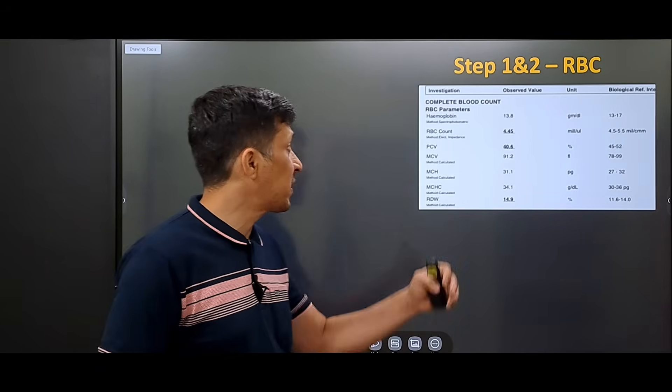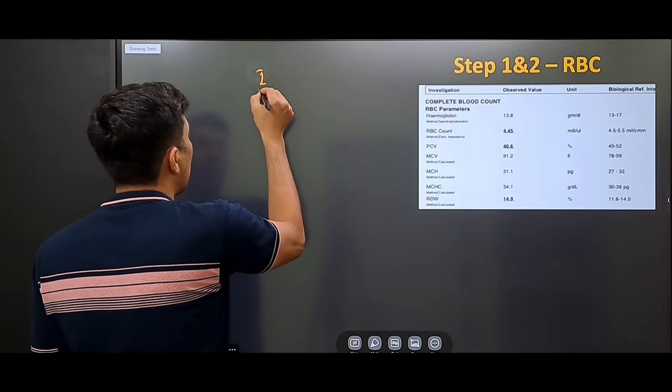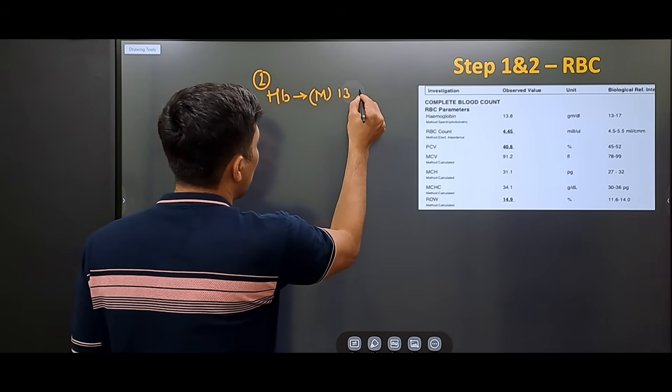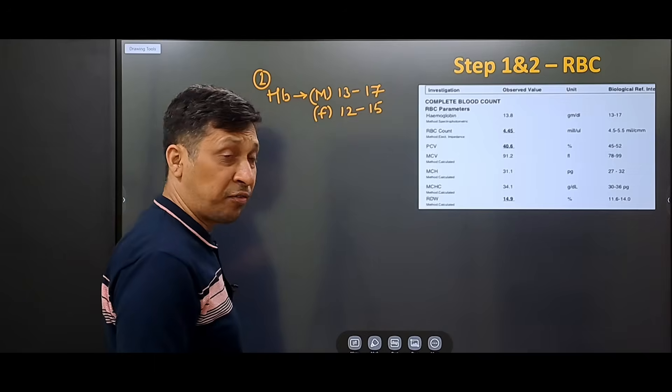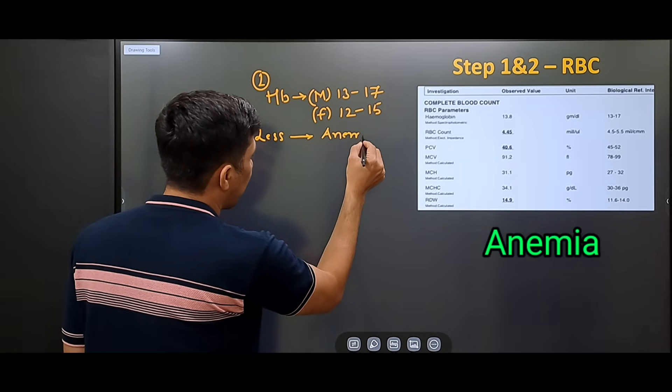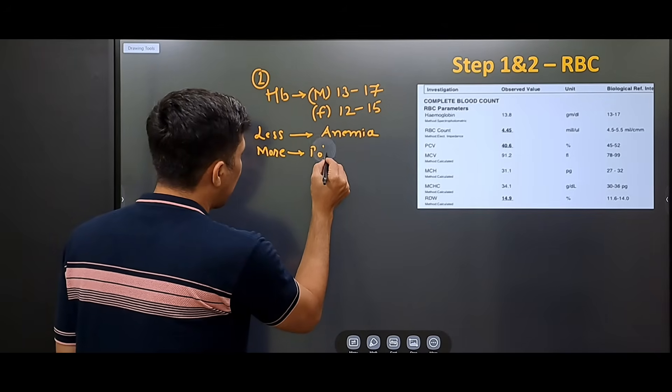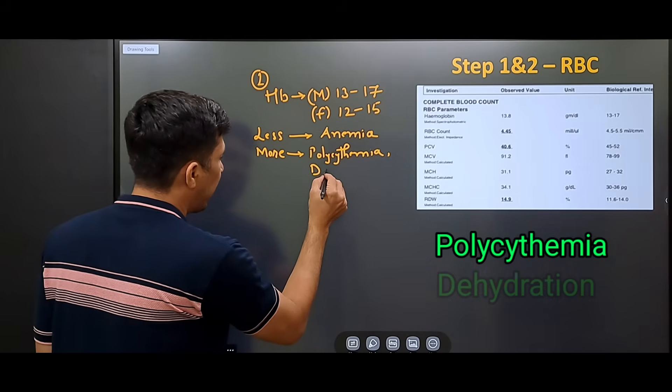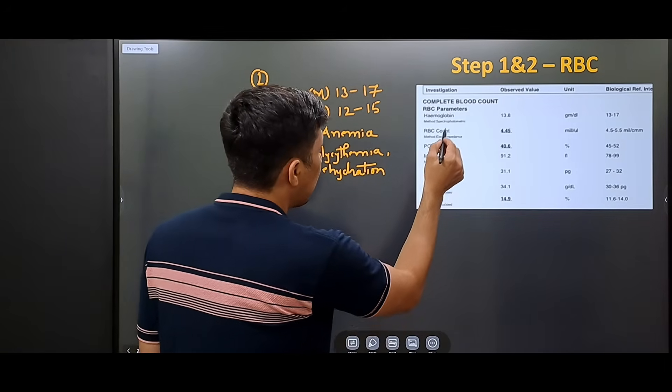Step 1 and step 2 are related to red blood corpuscles. In step 1, we see hemoglobin. Normally, hemoglobin in males is 13 to 17 and in females it is 12 to 15. If the hemoglobin is less then we call it as anemia. If hemoglobin is more than the normal value, then it can be either polycythemia or there can also be dehydration. This is the first step where we have seen the hemoglobin levels.